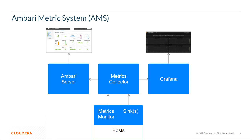Grafana is a daemon that runs on a specific host in the cluster and serves pre-built dashboards for visualizing metrics collected in the Metrics Collector. In summary, the Metrics Collector is a daemon that receives data from registered publishers, the monitors and sinks.